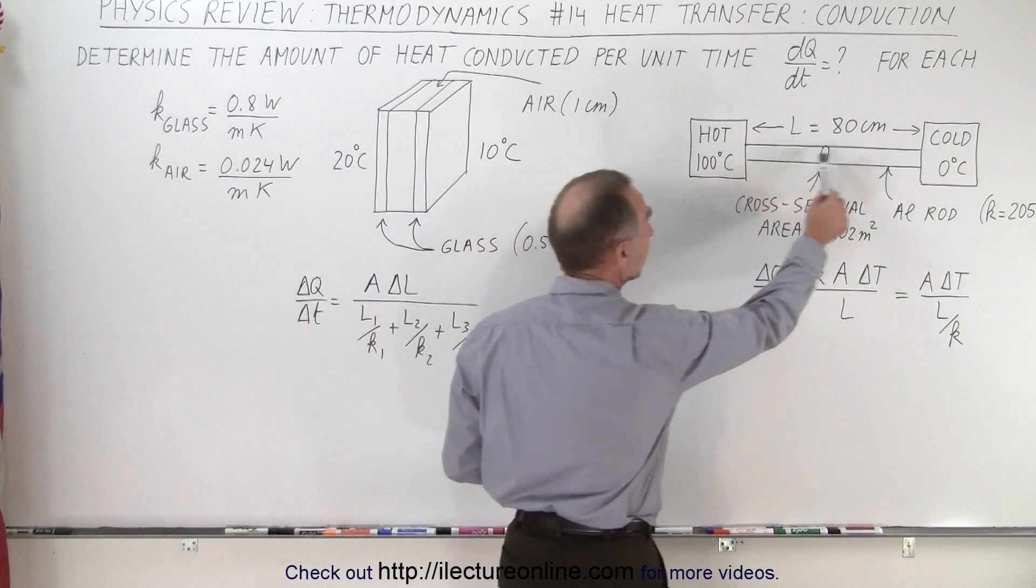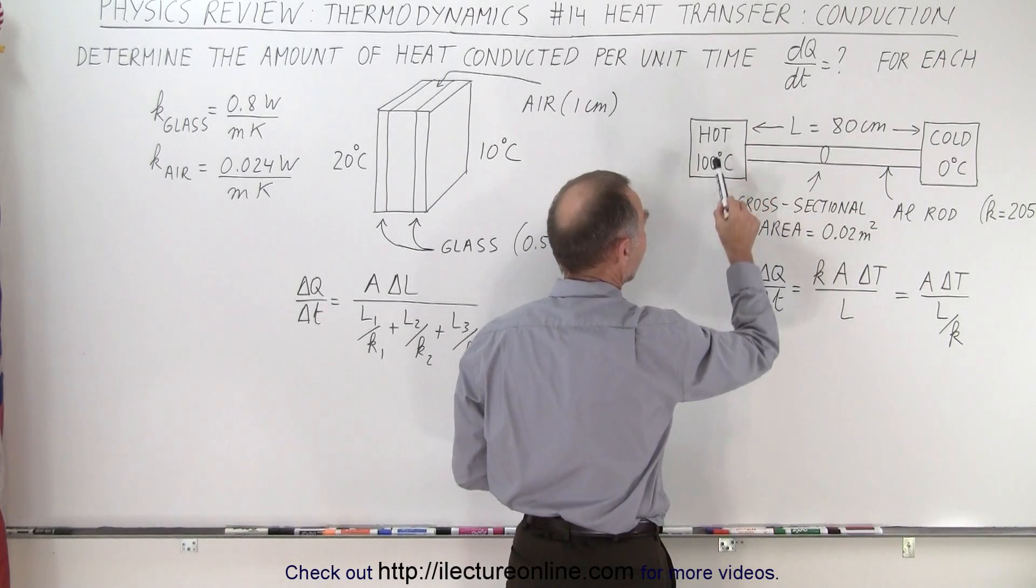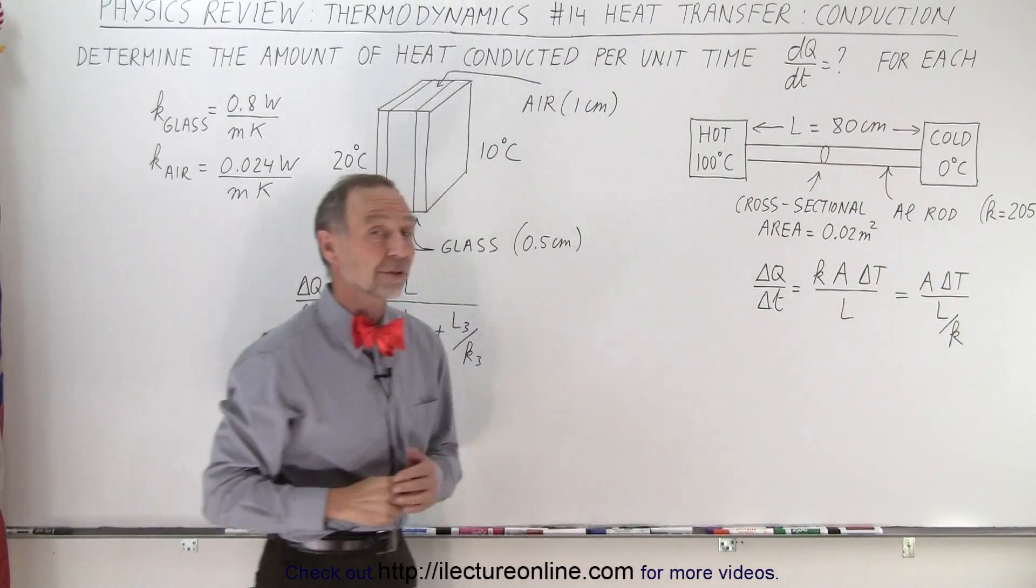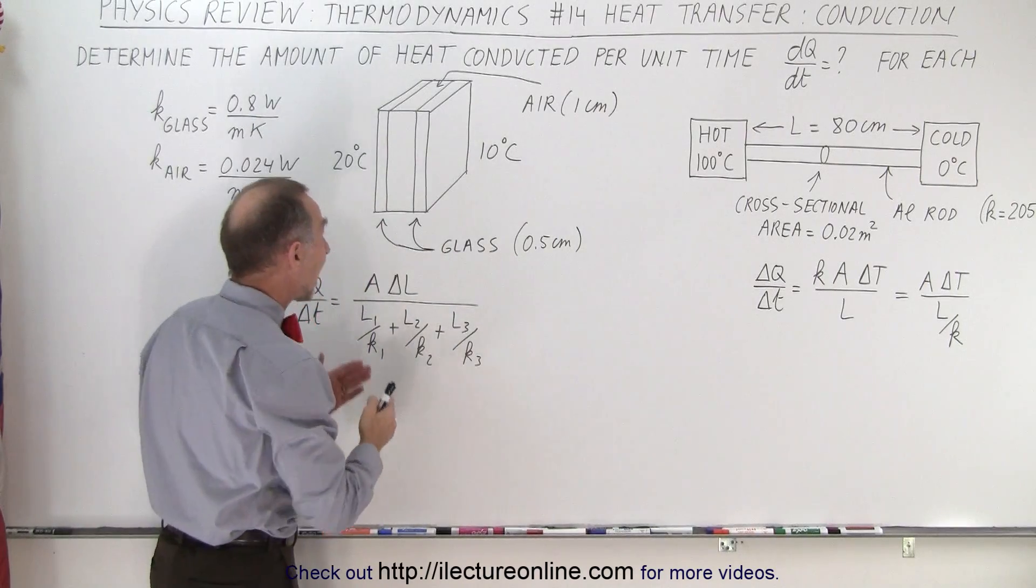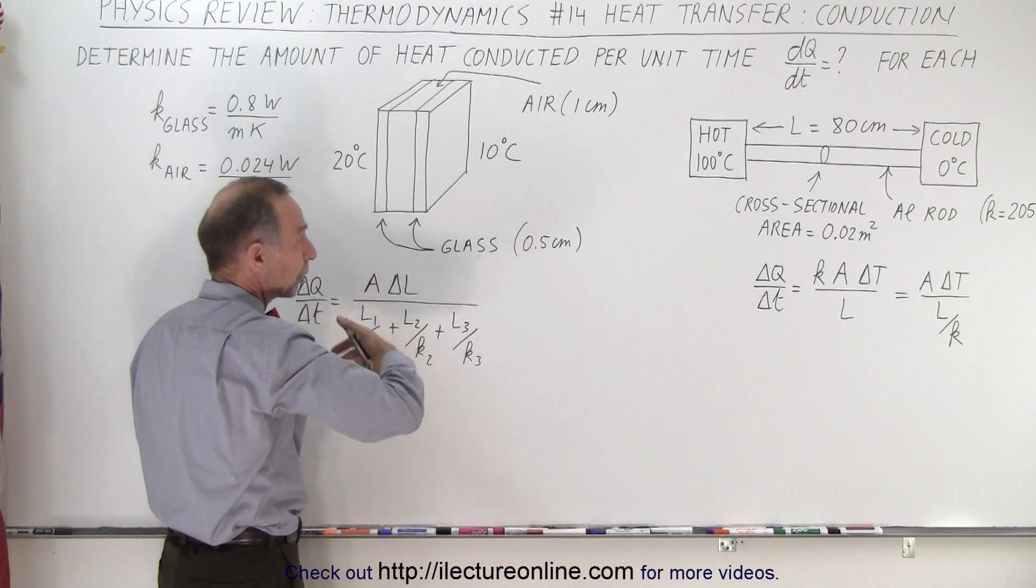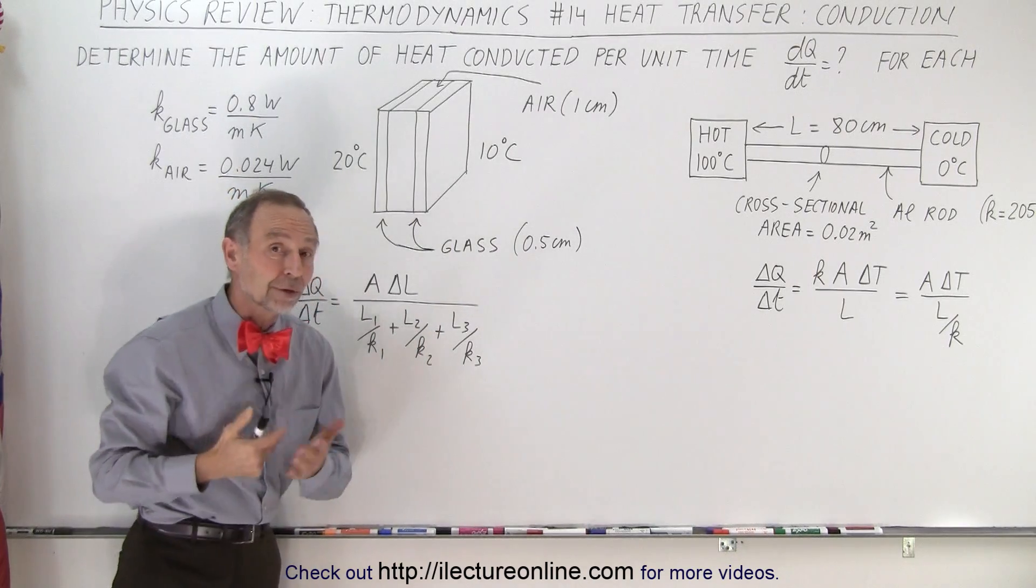One where we have a simple rod connected between a hot reservoir kept at 100 degrees celsius and a cold reservoir kept at zero degrees celsius. The second example has three layers. The heat travels through all three layers so we need to learn how to do that as well.